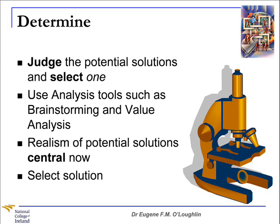The D stands for Determine. If carried out successfully, the Select, Record and Evaluate stages done previously should lead directly to one or more potential solutions. This is where you and your team judge the potential solutions and select one on a comparative basis. Use analysis tools such as brainstorming and value analysis to help you thoroughly examine each of the potential solutions. The realism of these solutions is very central, and at the end of this stage you select one of the solutions.